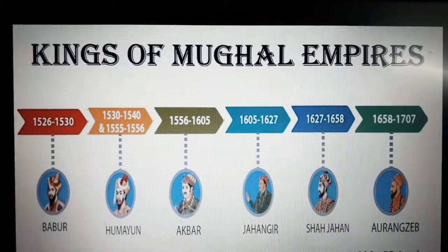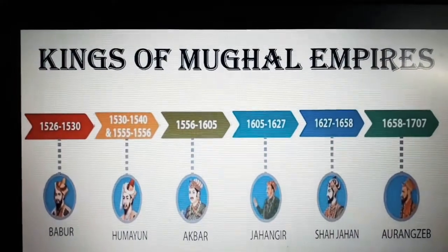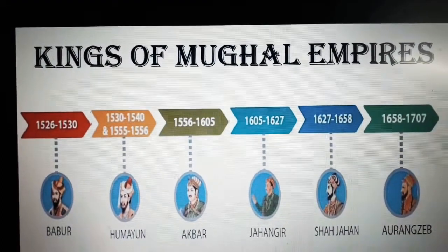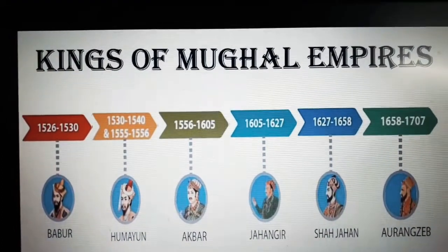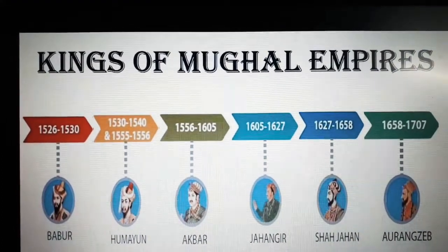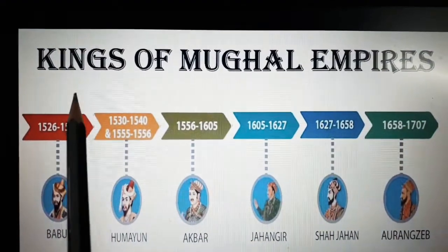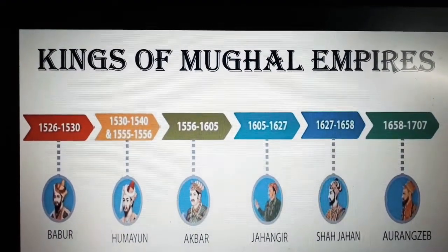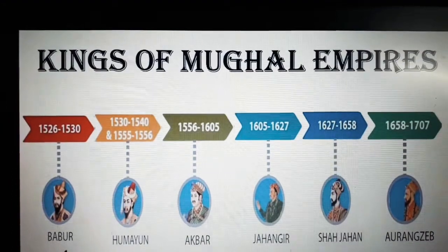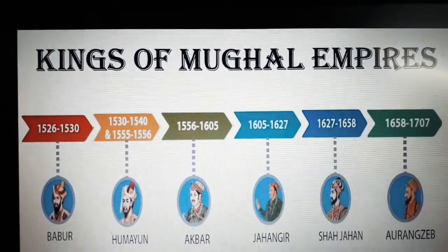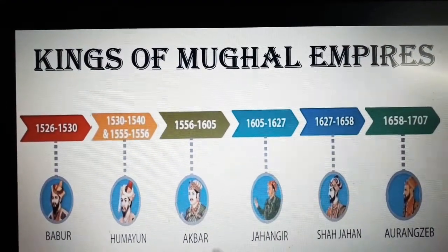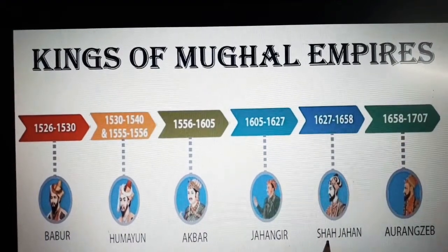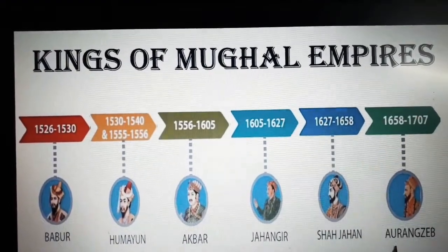In this lesson we are going to trace the foundation and establishment of the Mughal Empire in India. The kings of the Mughal Empire are: Babar, Humayun, Akbar, Jahangir, Shah Jahan, and Aurangzeb.